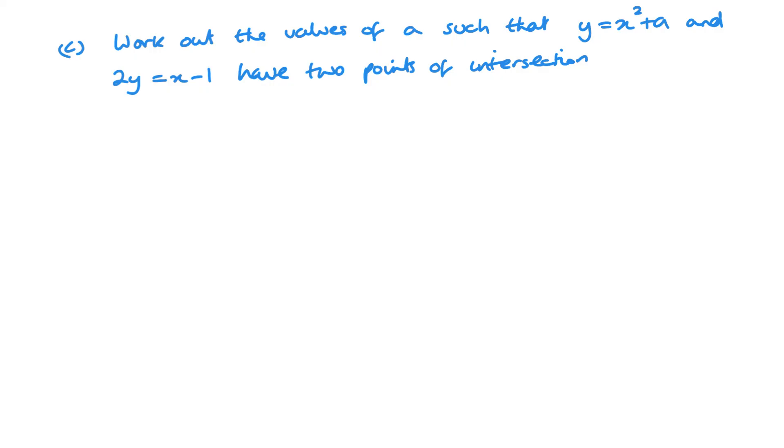For two points of intersection, then the discriminant must be greater than zero.